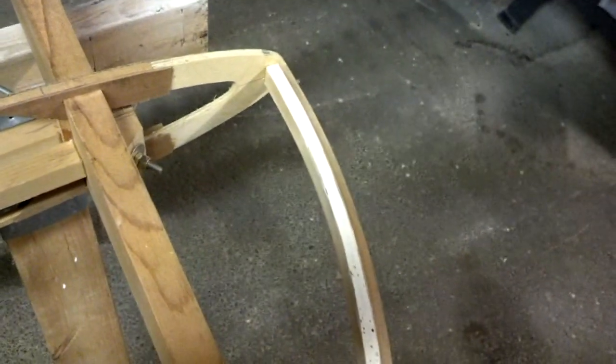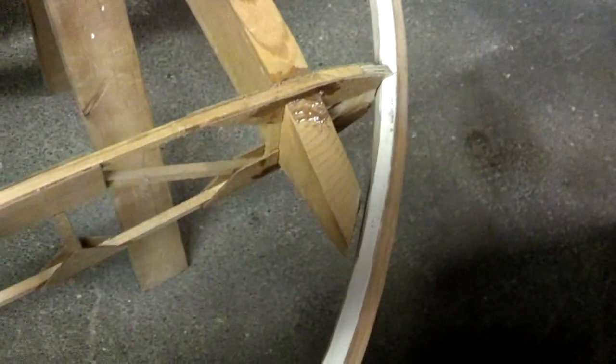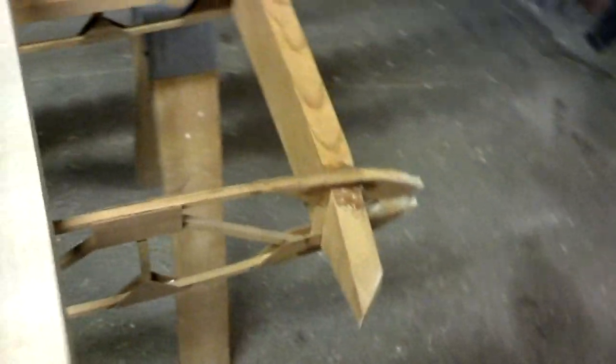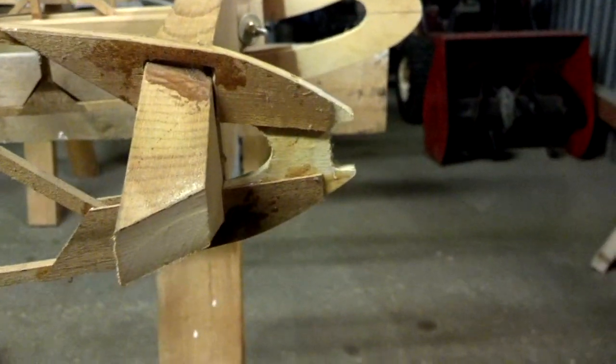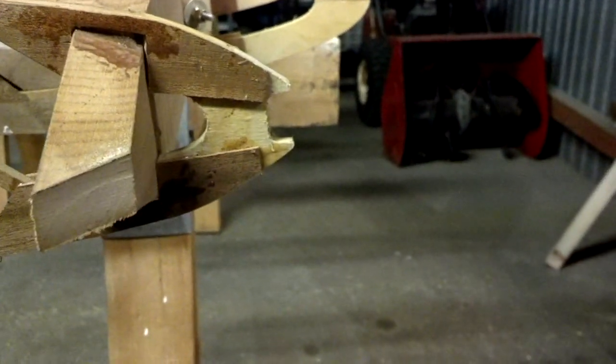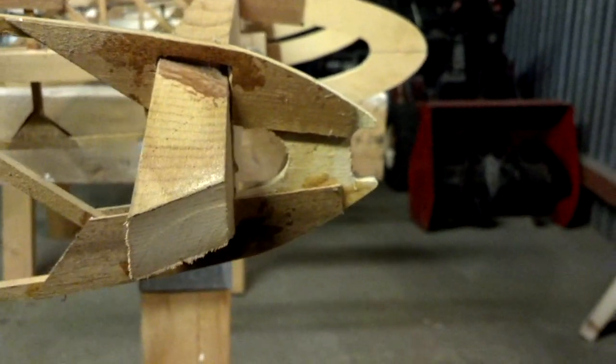So the one thing that we are going to have to do is bevel the notch in this wing tip rib so that the bow can lay through there, because it curves through. That flat notch is not going to help us out, so we'll go ahead and bevel that.